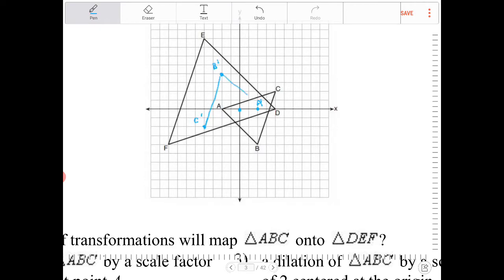If I rotate triangle ABC over the origin, I would end up with that orientation. And then it looks like it's going to be a dilation of two.